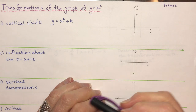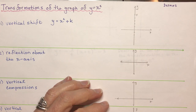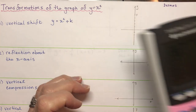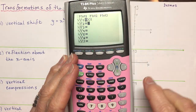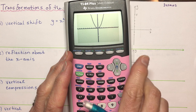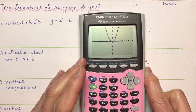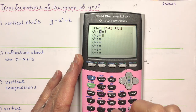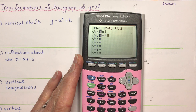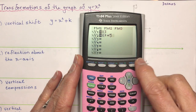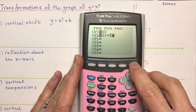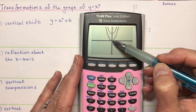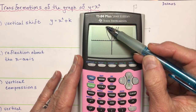A vertical shift means you take the function y equals x squared — your nice perfect little parabola — and you shift it up k units. So here's x squared graphed as a nice little parabola. Now if I put in another equation, let's say x squared plus 5, watch quickly because it graphs very fast. It'll draw x squared and then x squared plus 5. So you can see the graph has exactly the same shape.